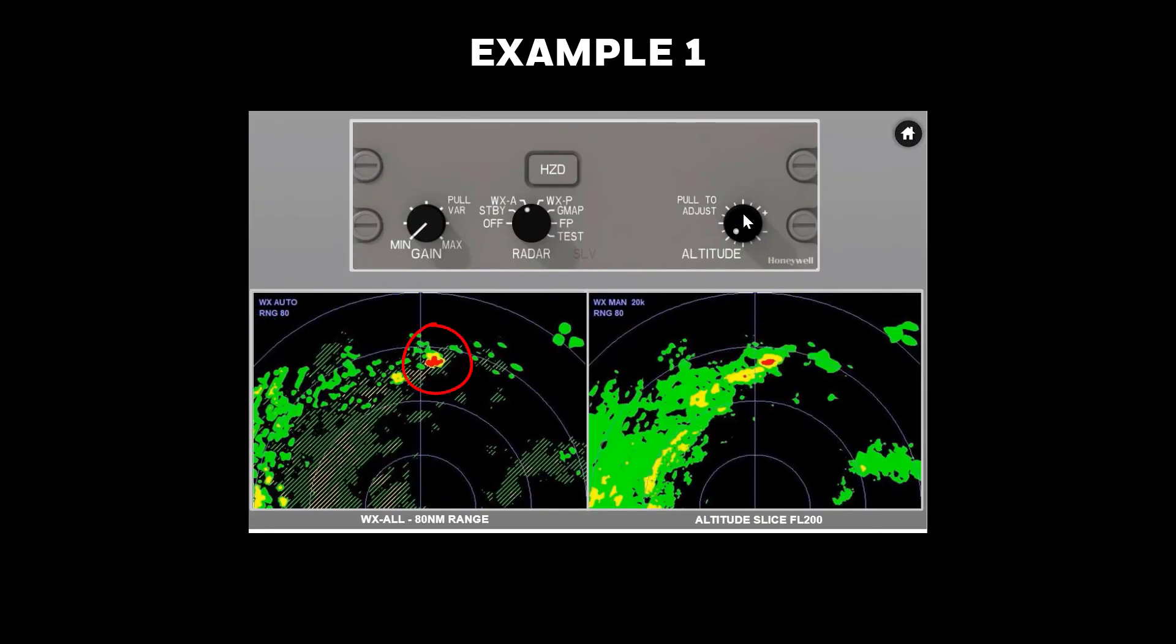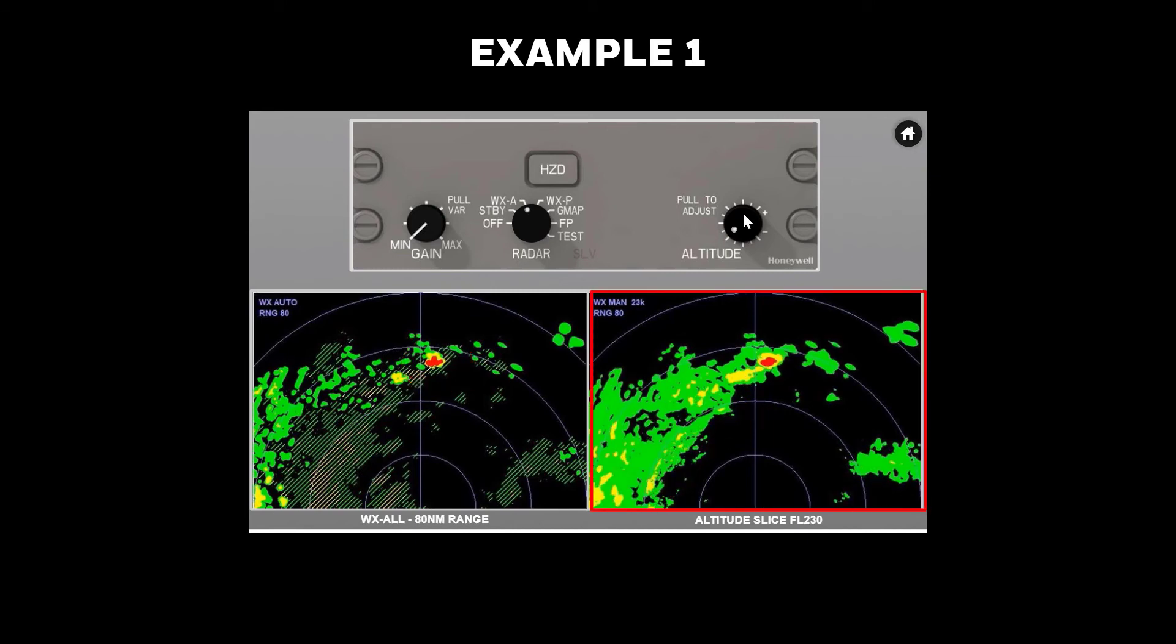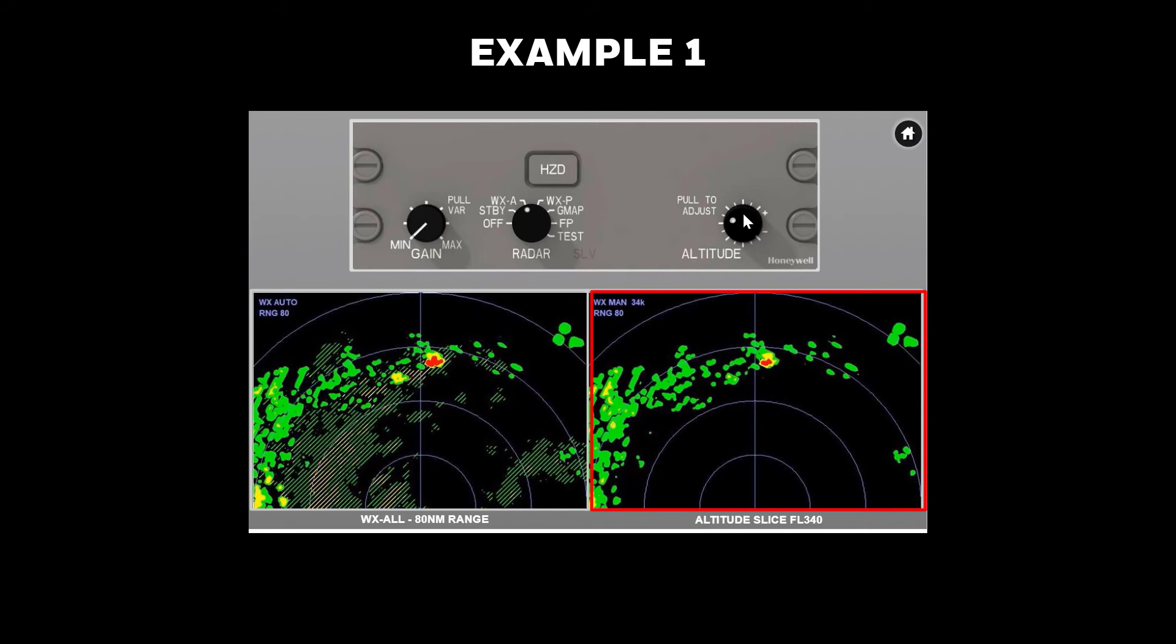20 miles closer, the cell on the right is showing much more reflectivity in auto mode. Using the altitude knob, a slice at flight level 400 shows it is the only cell that is a hazard at the aircraft's flight level. Also, the weather to the right of the two cells in the deviation path has developed into nothing of interest.